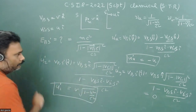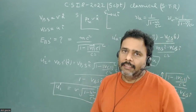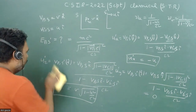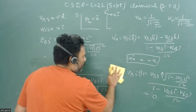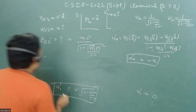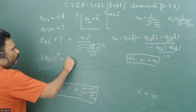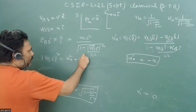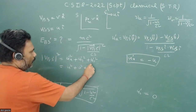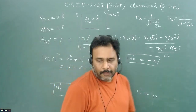Now we have all components of the velocity of the particle with respect to S-dash. The magnitude squared is |v'|² = ux-dash² + uy-dash² + uz-dash² = u² + 0 + v²(1 − u²/c²).